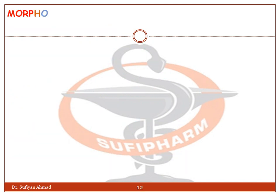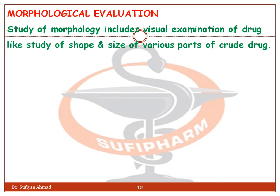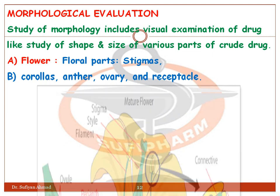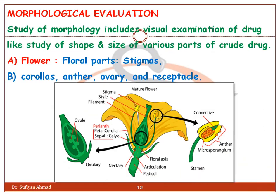Morphological evaluation involves the study of morphology, including the visual examination of the drug such as study of shape and size of various parts of crude drug. Different parts examined include, first, the flower and floral parts.